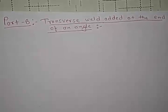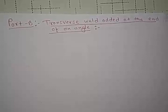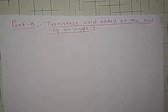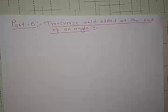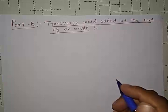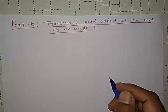Now if the transverse weld is added at the end of an angle, it should be applied symmetrically about the centroid or CG of the section so that the eccentricity of the loading can be avoided. So how this can be taken place, we'll just first draw the diagram.